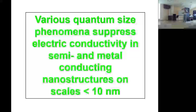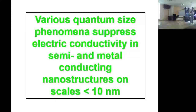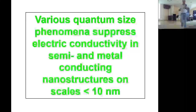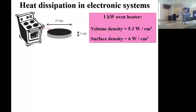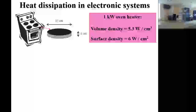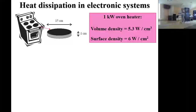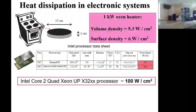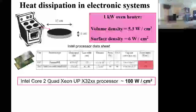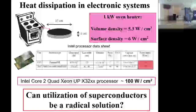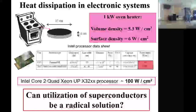И с полупроводниками, и с нормальными металлами при достижении размеров ~10 нанометров возникает проблема с протеканием электрического тока. Мощность выделения тепла в современных процессорах уже превысила 100 Ватт на квадратный сантиметр — для сравнения, кухонная плитка даёт около 6 Вт/см². Это приводит к соблазну использовать сверхпроводники, у которых сопротивление равно нулю и которые не выделяют джоулевого тепла.